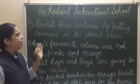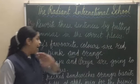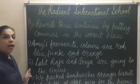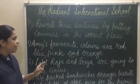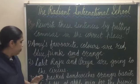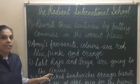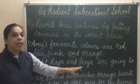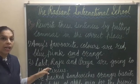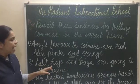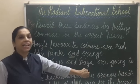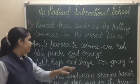Answer: Amhi's favourite colors are red, blue, pink, and orange. Number two: Lalit, Raju, and Priya are going to the circus. Here, this is the list of people — Lalit, uske baad comma aayega. Raju ke baad comma nahi aayega because Priya is the last item.